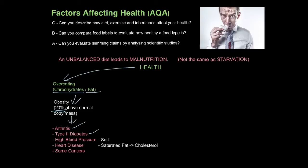If we take too much salt into our diet, it can raise blood pressure, and that has been linked to increasing the chances of developing heart disease. Also, if we consume too much fat, particularly saturated fat, it can lead to an increase in cholesterol in our body, and that has also been linked to increasing the chance of developing heart disease. Overeating has also been linked to increasing the risk of developing certain cancers, such as bowel cancer.